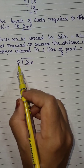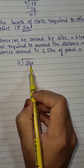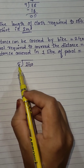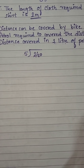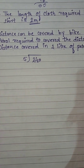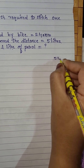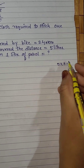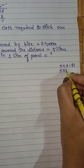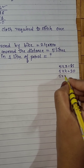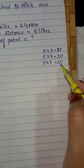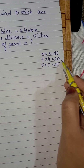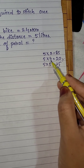Read the 5 times table till you get the number 24: 5×1=5, 5×2=10, 5×3=15, 5×4=20, 5×5=25. The number 24 lies between 20 and 25, so take the lesser number. 5 fours are 20.